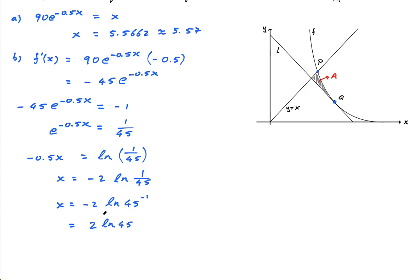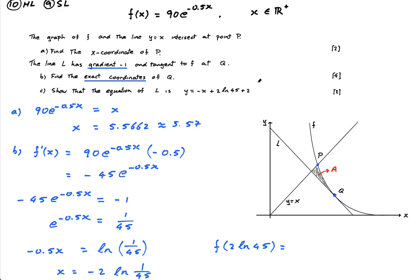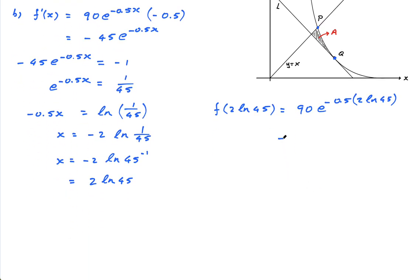So f of 2 ln of 45 is equal to, I have to sub 2 ln of 45 now into this. So it's 90 times e to the minus 0.5 times 2 ln of 45.